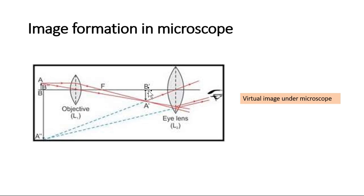This real inverted image acts as an object for the eyepiece. The rays from this go to our eye but they are not converging, so we draw a virtual image by extending backward. Here they appear to converge, and AB is again inverted but the image is virtual. The final image formed in a microscope is a virtual image.